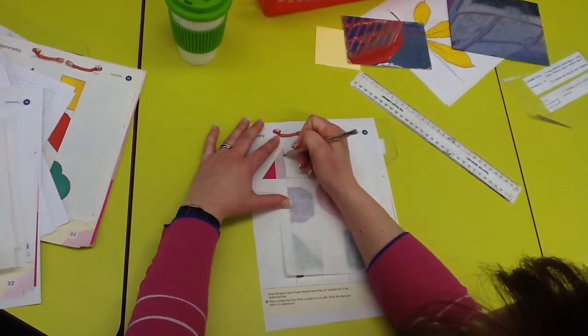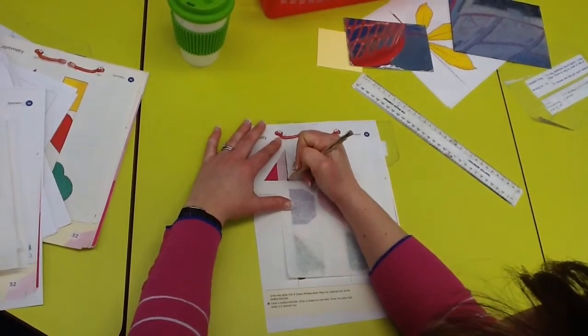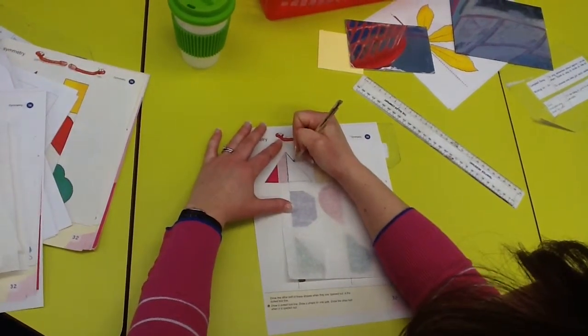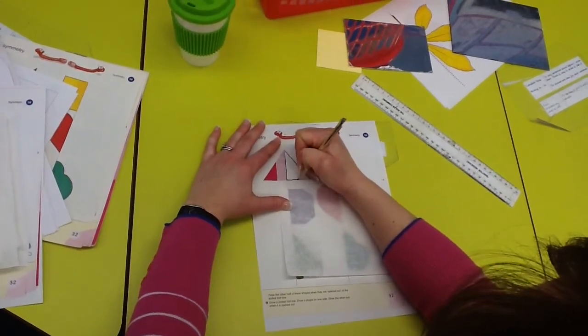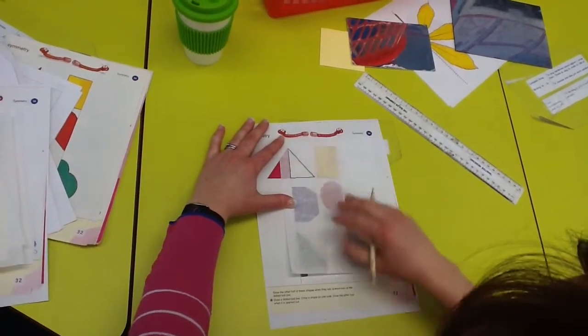Now, I'm not going to use a ruler for this bit because I'm just going to draw over it with my pencil. You've got to be really careful though. And I'm going to draw over the lines that I just drew on the other side.